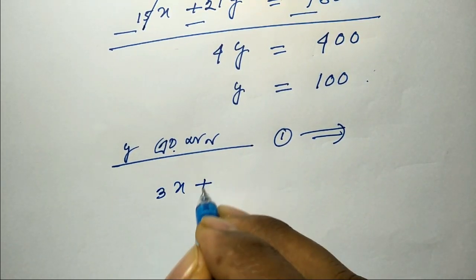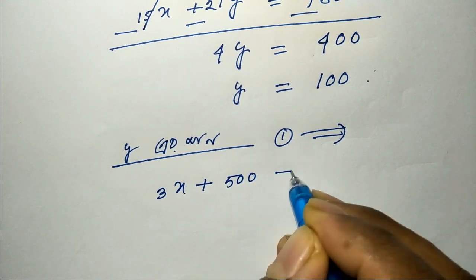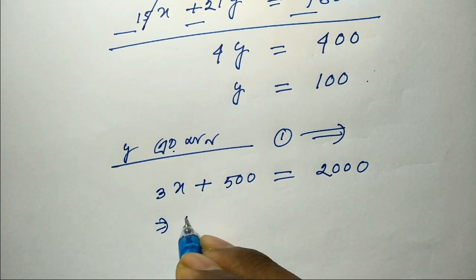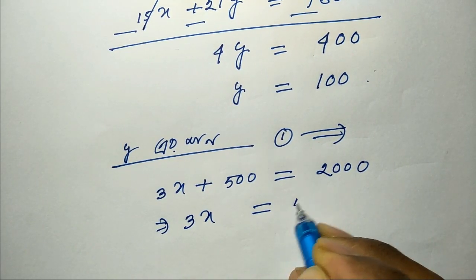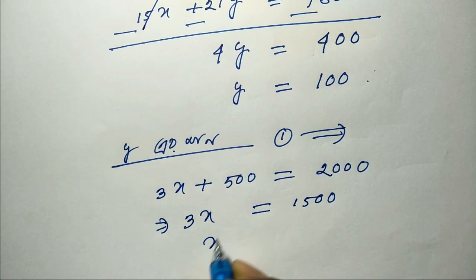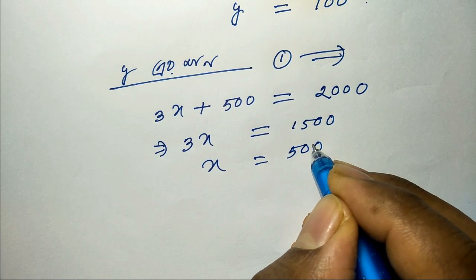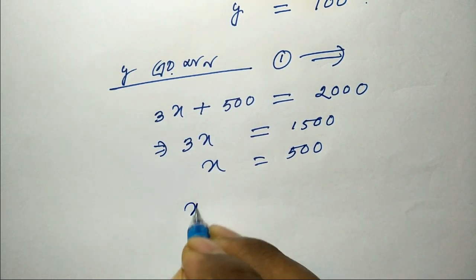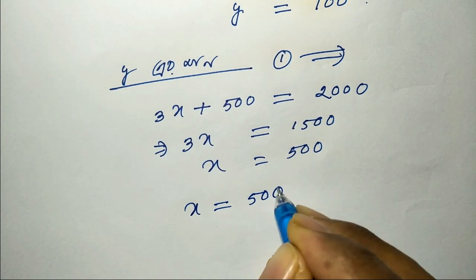Solving the simultaneous equations gives 3X equals 500. The answer for the chair and table prices are obtained from this partial result.